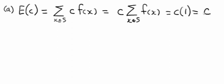So in general, the expected value of any constant is a constant. Now, let's do the expected value of C times some function u.